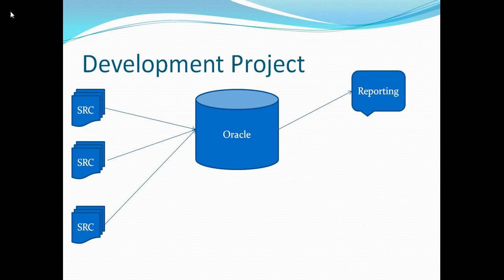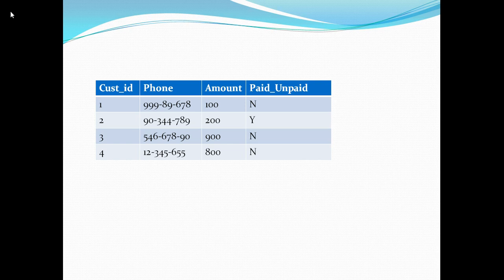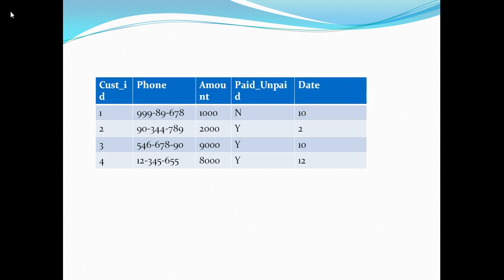Now let's discuss our third type of project: the maintenance project. Here I have a table from an insurance company which has monthly details of customers who are supposed to pay premium. My callers are not sure on what exact day they should call the policy holders — they don't know what exactly is the due date. So as a part of this enhancement, I want to add an additional column: due date. Nothing else is going to change — just this column is to be added, which will reflect the day past which a penalty will be labeled. The development team has added the column, but I see that there have been multiple changes — the amount has been multiplied by 10 and the paid/unpaid indicator values have changed. So as a tester, I should know that apart from the date column, nothing should have been changed — there is a mistake.